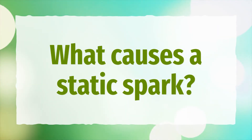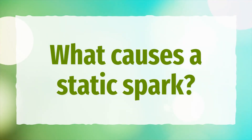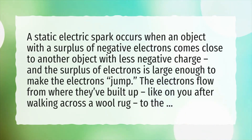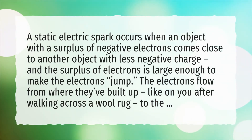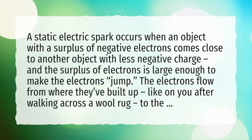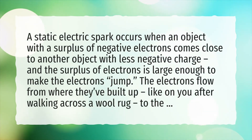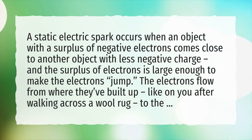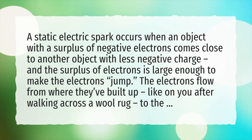What causes a static spark? A static electric spark occurs when an object with a surplus of negative electrons comes close to another object with less negative charge, and the surplus of electrons is large enough to make the electrons jump. The electrons flow from where they've built up, like on you after walking across a wool rug.